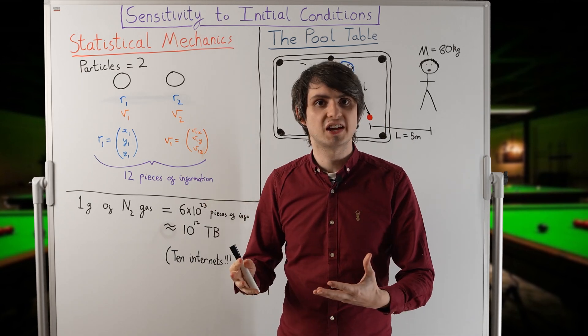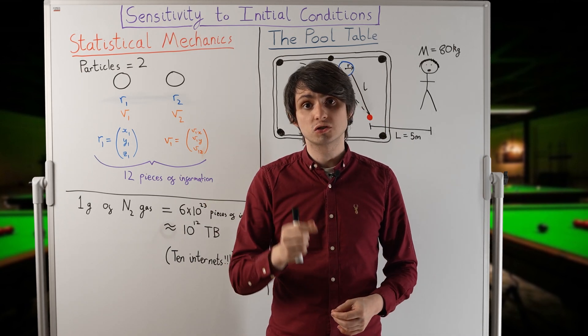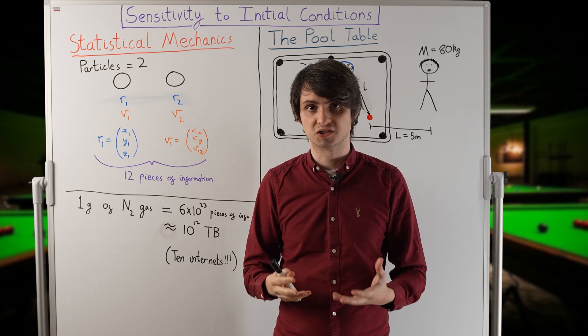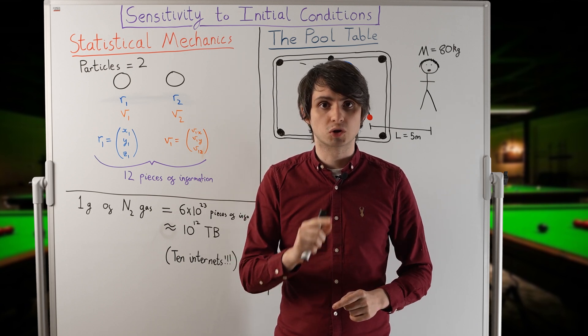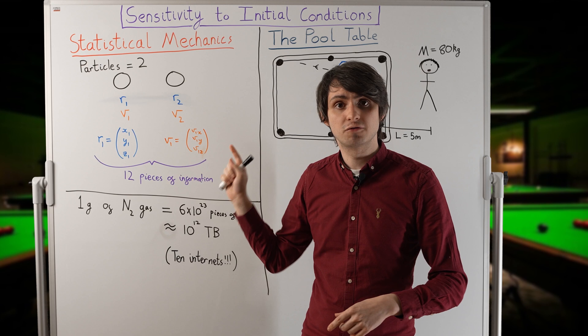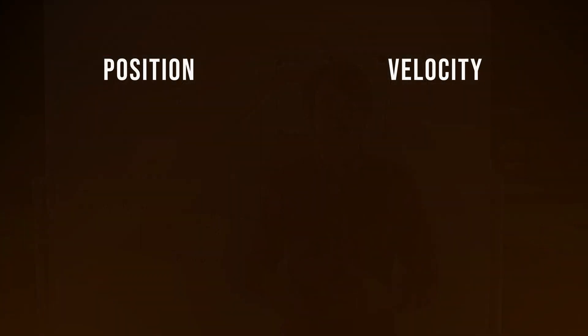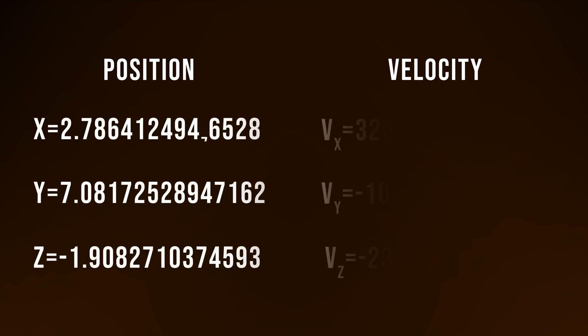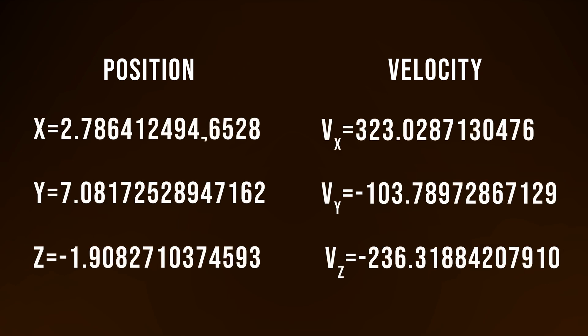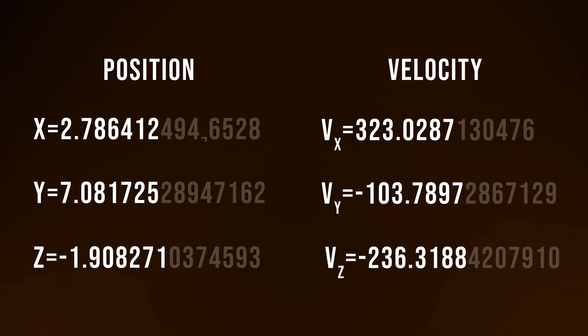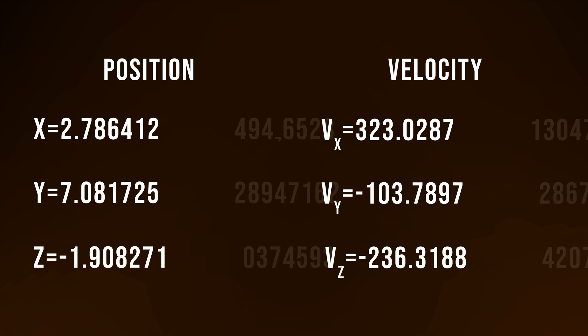When you're storing data on a computer, you can't specify real numbers with perfect precision. Let's say that we wanted to record the initial positions and velocities of all the particles in our gas. When we enter them into the computer, we can't specify them to an infinite number of decimal places. We just choose, say, seven significant figures, for example. What this means, though, is that you're throwing away some information, and it turns out that your simulation of the gas will very quickly become completely inaccurate.